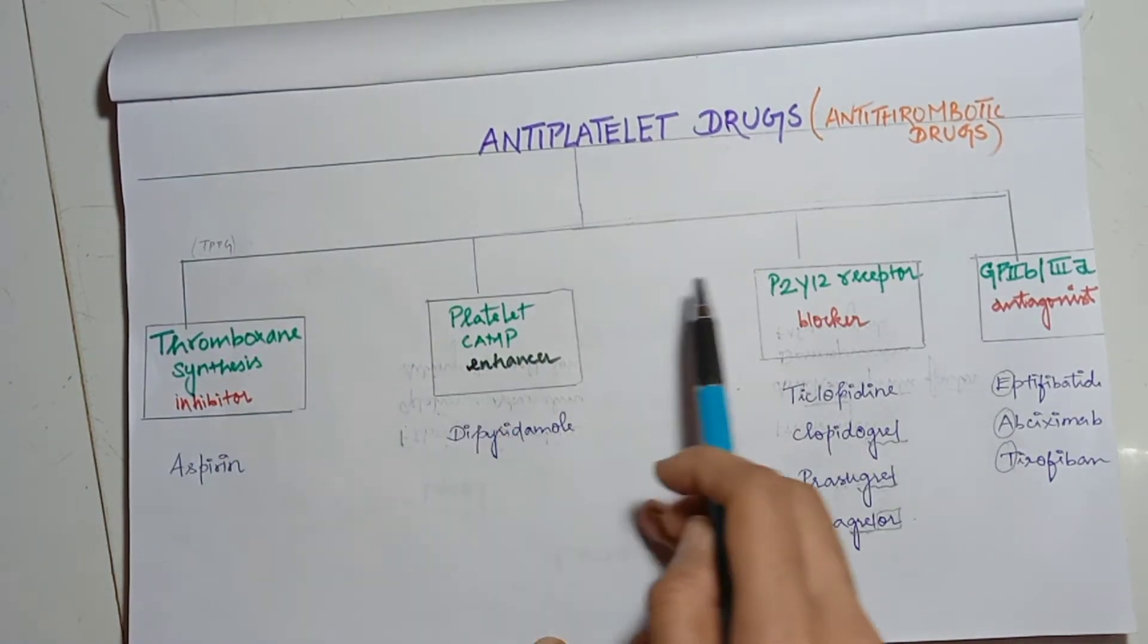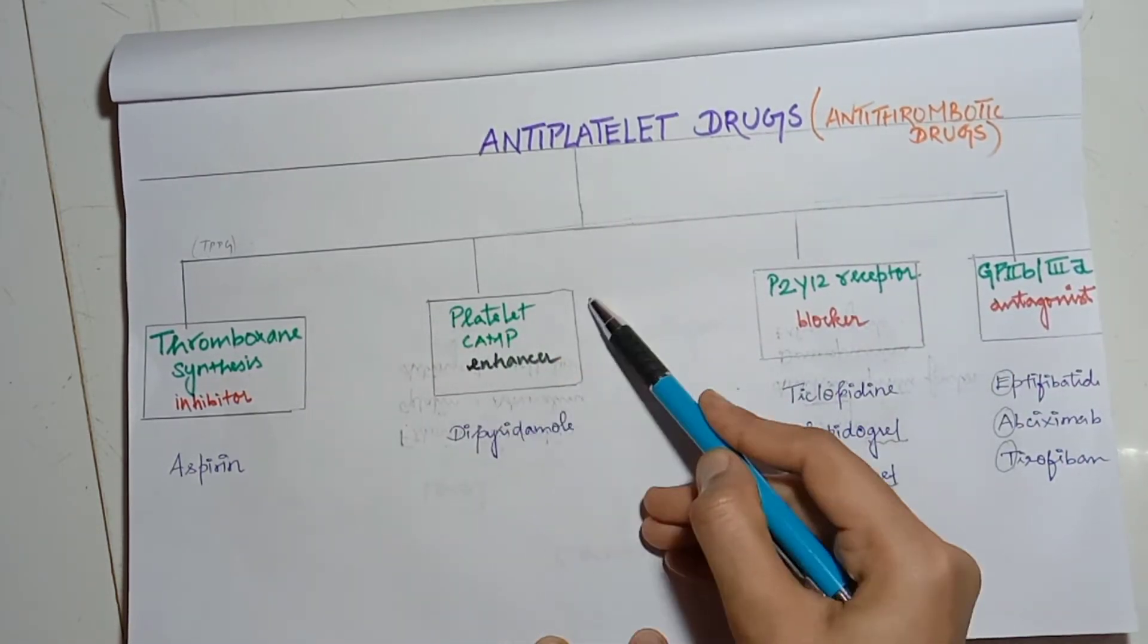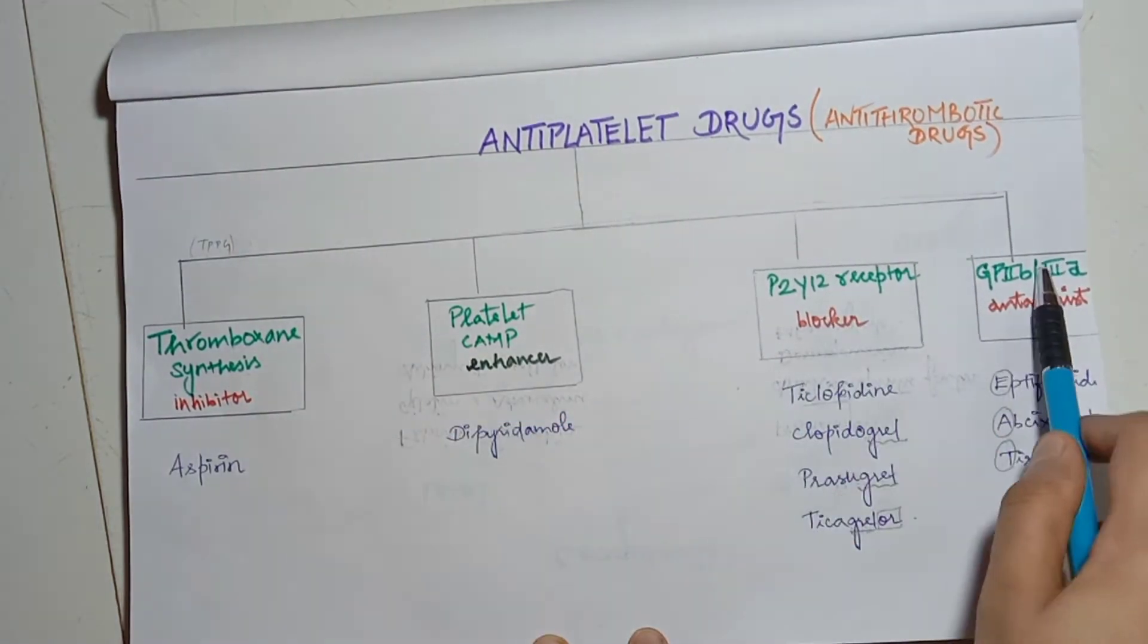P is platelet camp. P is P2Y12 receptor. G is GP2B3A. Remember these are blocker type, inhibitor, blocker, antagonist.